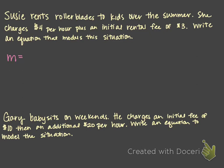We have two numbers: 4 and 3. We need to identify which is our growth — the slope — and which is the starting value, the y-intercept. $4 per hour is the one that's going to keep growing because we're charging $4 every single hour, so our m value will be 4. The initial rental fee of $3 is a one-time fee — that's where we start, the base price — so our b value equals 3. We replace m with 4 and b with 3 in slope-intercept form to get our final equation: y equals 4x plus 3.